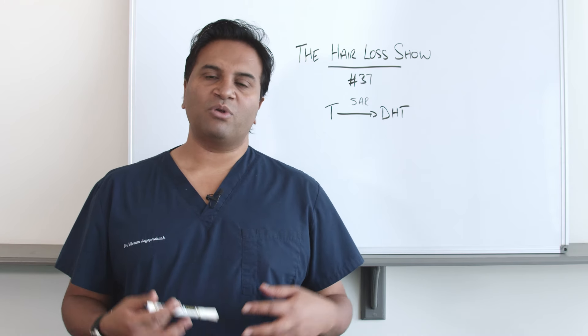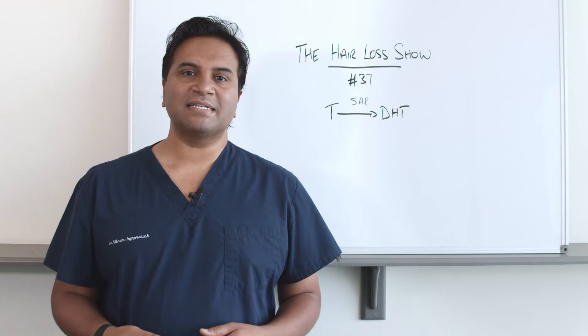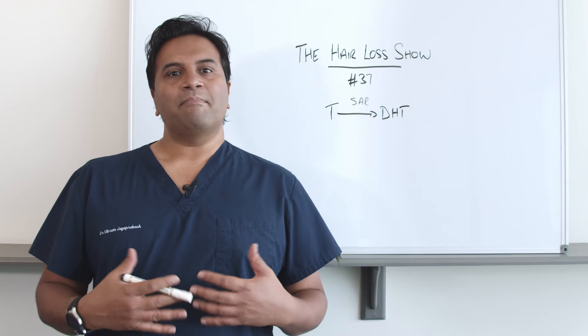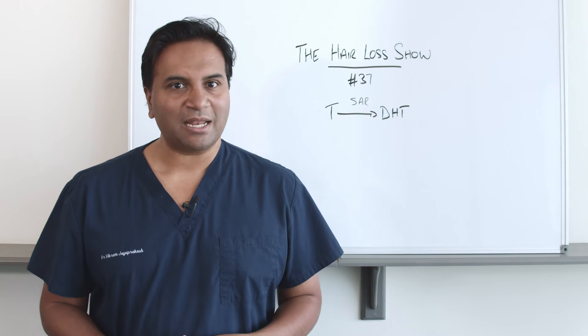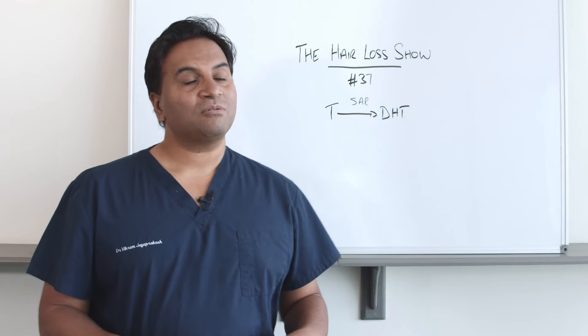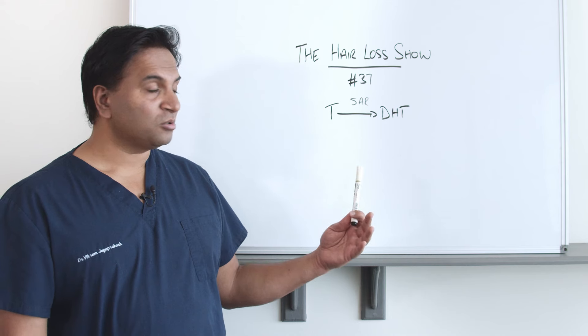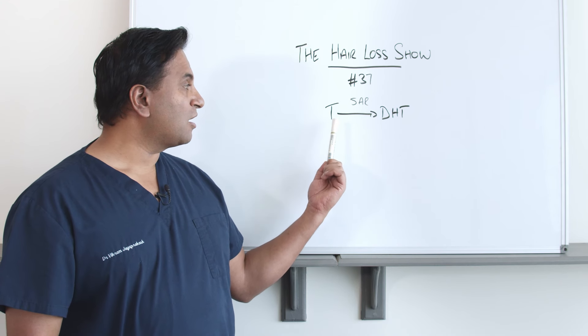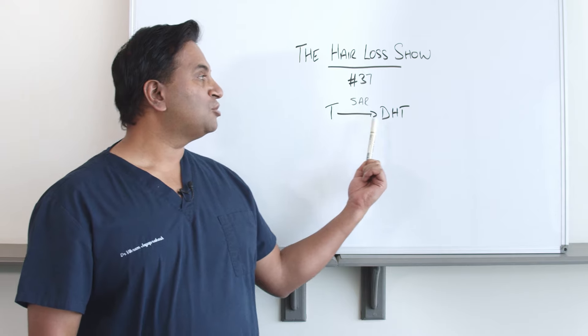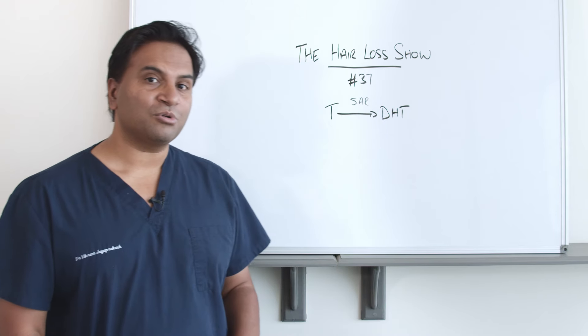So what does that mean? If we go through the basics again and look at male pattern hair loss or androgenic alopecia, it is a result of genetics and also a hormonal change, which is a change from testosterone to dihydrotestosterone.